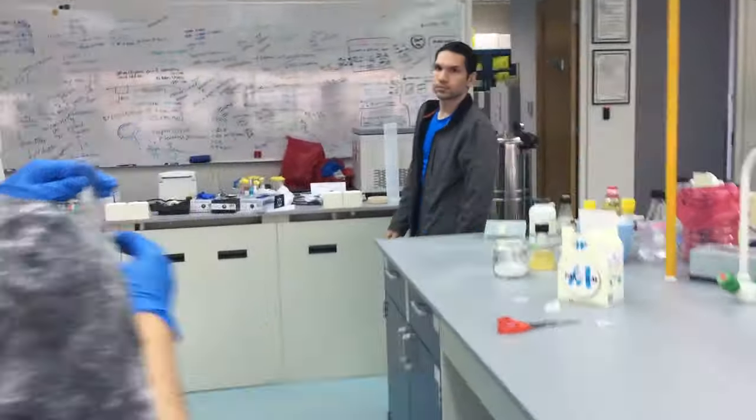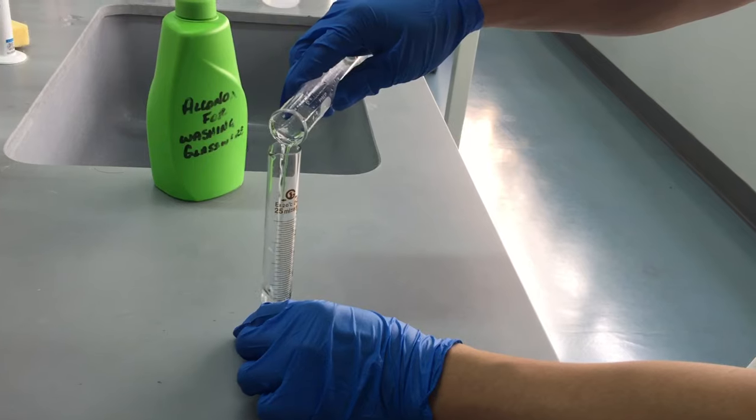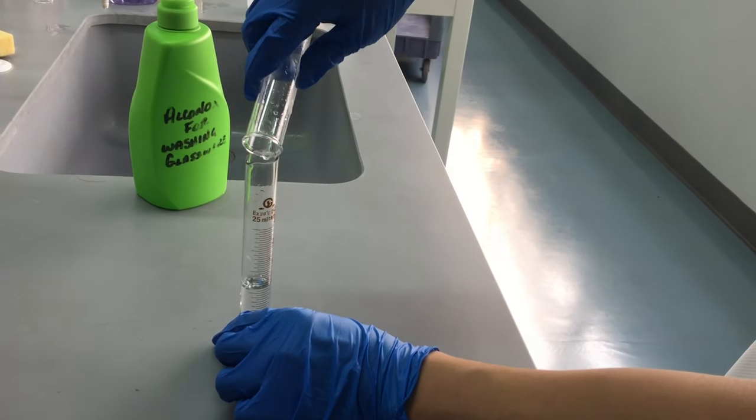Fill the test tube with water until the mark line. Pour the water from the test tube into a measuring cylinder to measure the volume of gas produced in the reaction.